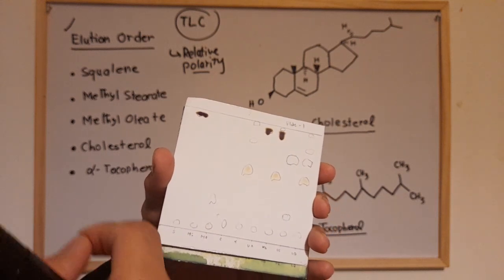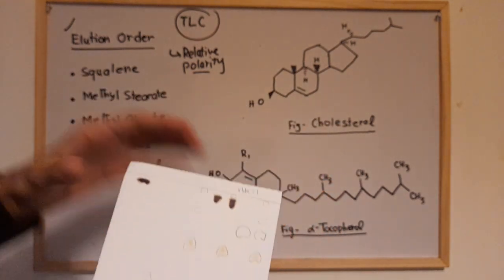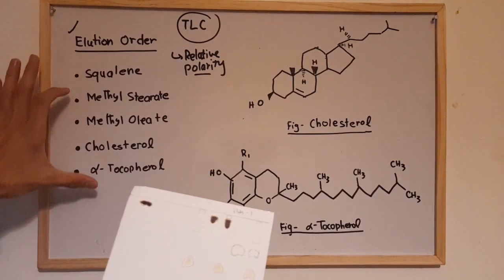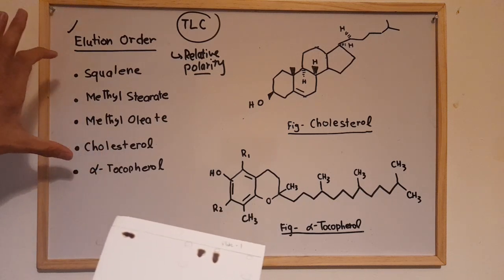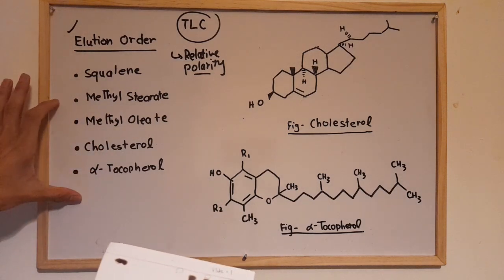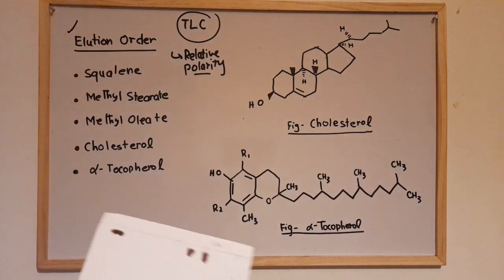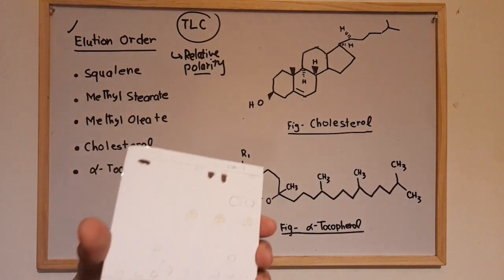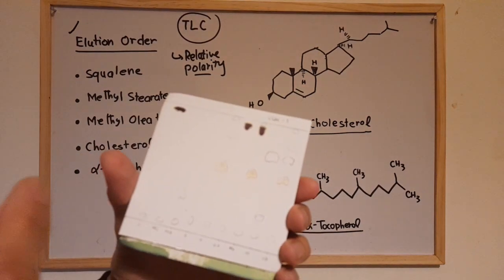So the question is: which of these components elutes first, and what is the order of elution?